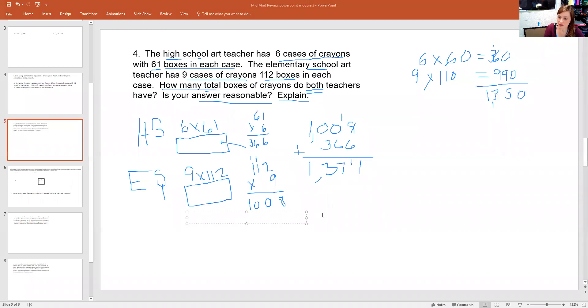So now I'm just going to answer all of the question that they're asking here. So let's answer. The first part says, how many total boxes of crayons do both teachers have? I'm going to use what they said and give it back to them. I'm going to say the high school teacher and elementary teacher have a total of 1,374 boxes of crayons together.